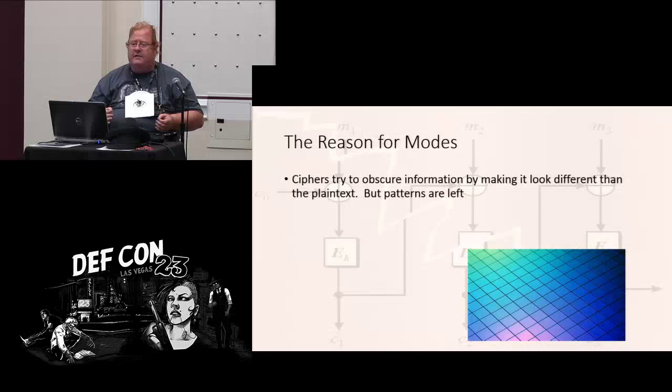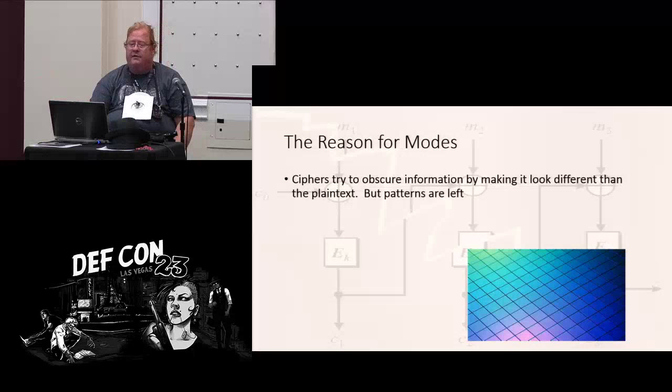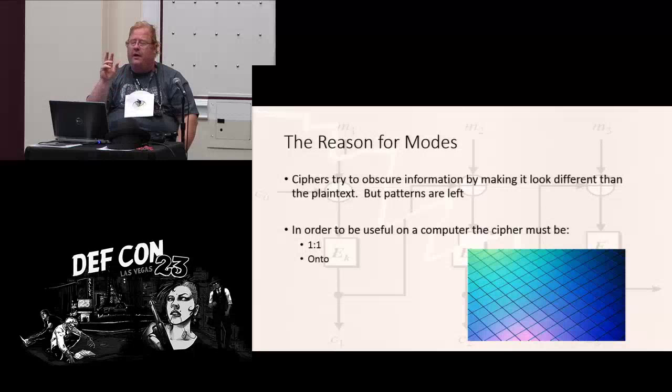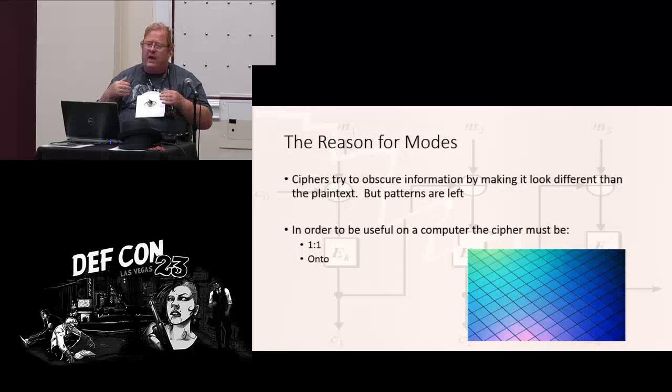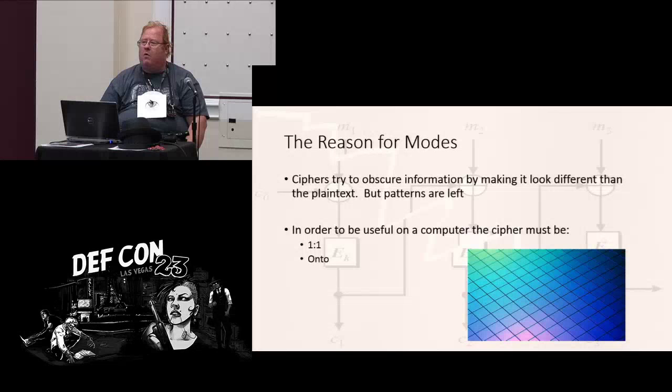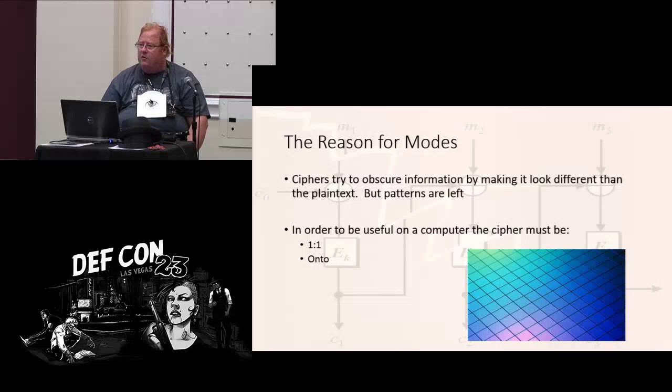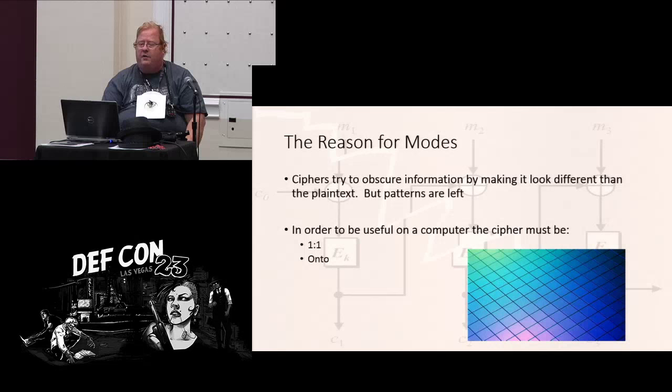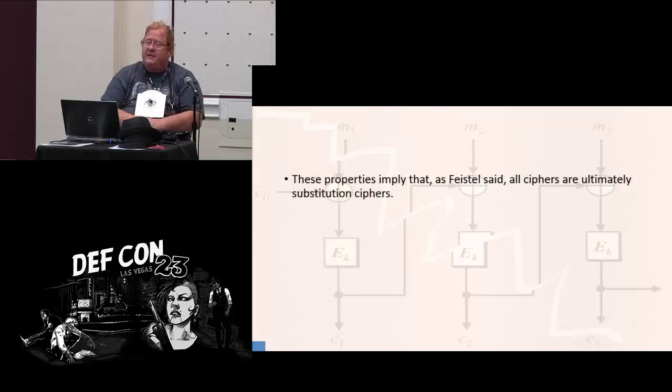When you plot the original message for the number of collisions, and then you plot the encrypted message, you get exactly the same curve. That's terrible. Well, it turns out that a lot of people knew this all along, so they made something called a mode. The most popular mode nowadays is cipher block chaining mode. It's normally used to disguise the patterns of AES.